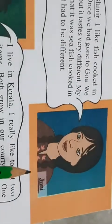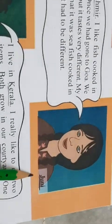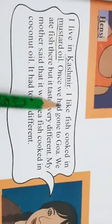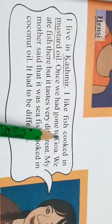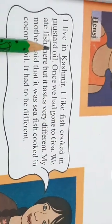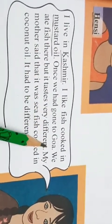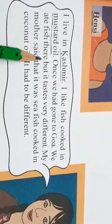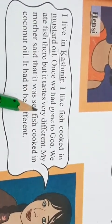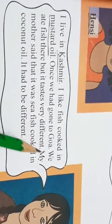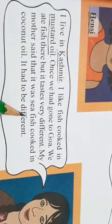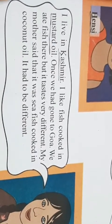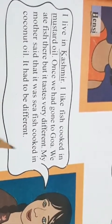Now see, this girl is Juni. I live in Kashmir. I like fish cooked in mustard oil. Once we had gone to Goa, we ate fish there, but it tasted very different. My mother said that it was a sea fish cooked in coconut oil, so it had to be different.